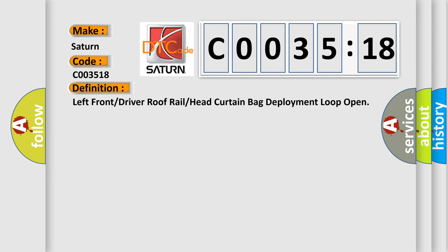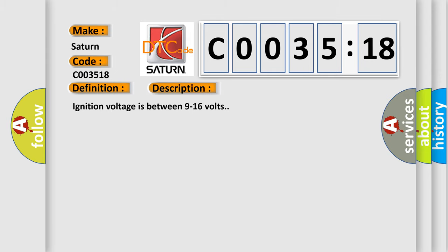And now this is a short description of this DTC code. Ignition voltage is between 9 to 16 volts. This diagnostic error occurs most often in these cases.